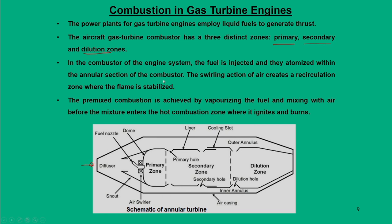To sustain combustion, swirling actions and recirculation zones are created within the annular portion to stabilize the flame. Premixed combustion is generally achieved by vaporizing the fuel and mixing it with air before the mixture enters the hot combustion zone where it ignites and burns. This happens in the primary zone, after which the flow moves to the secondary zone.